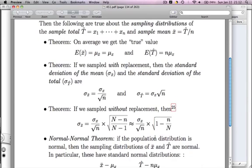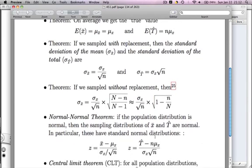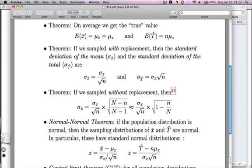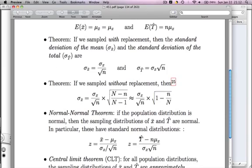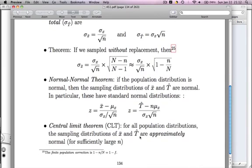Two more results. So the first I call the normal normal theorem. It doesn't really have an accepted name, but I want to give it a name, so we'll call it the normal normal theorem. This states that if you are sampling from a normal distribution, then the sampling distributions of X bar and T hat will also be normal. Now that's interesting.